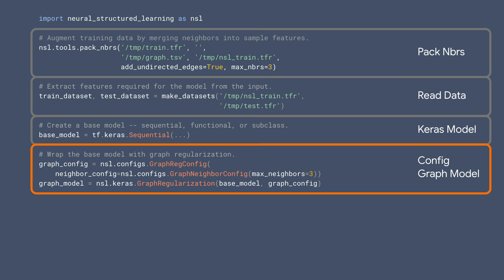Once we have a base model, we define a graph regularization configuration object, which allows you to specify various hyperparameters. In this example, we use three neighbors for graph regularization. Once this configuration object is created, you can wrap the base model with the graph regularization wrapper class. This will create a new graph Keras model, whose training loss includes a graph regularization term.